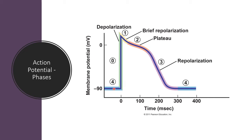Phase 4 is the phase of resting membrane potential, which is usually minus 90 millivolts. Phase 0 is the phase of rapid depolarization. Phase 1 is the phase of brief rapid repolarization. Phase 2 is the plateau phase. Phase 3 is the phase of slow repolarization. And phase 4 is the phase of resting membrane potential.